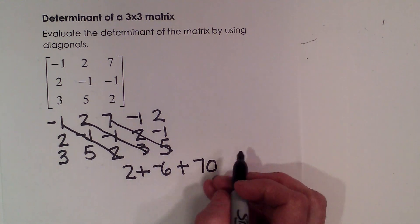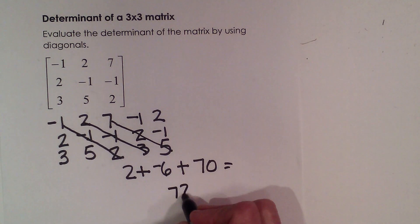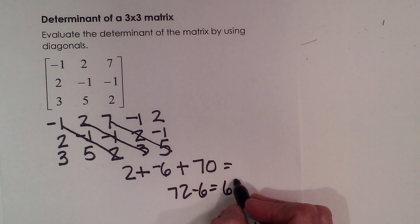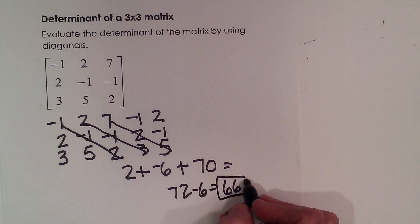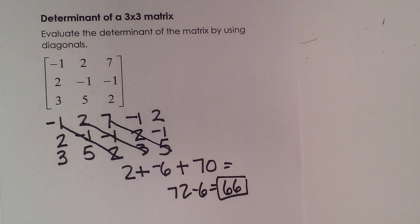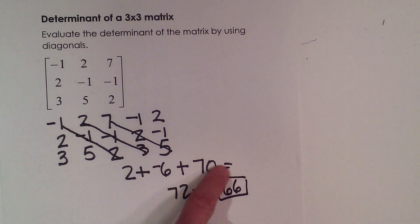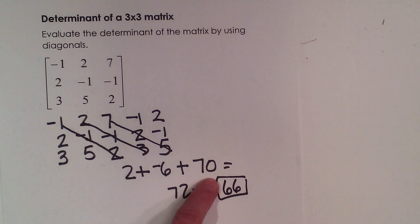Now that adds up to 72 minus 6, which is 66. Okay, so there's the product of my down diagonals, the product of each one. And then I take the sum of those diagonals.